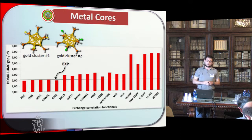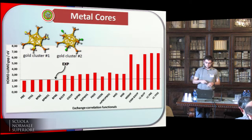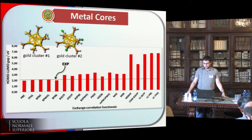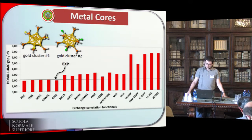For the second gold cluster, the experimental optical spectrum is available. From the optical spectrum, a HOMO-LUMO gap of slightly larger than two electron volts has been extrapolated. As you can see, the GGA functionals actually reproduce this HOMO-LUMO gap quite well, while other functionals that perform well on gold — such as M06-HF and CAM-B3LYP — yield an energy gap which exceeds the four electron volt threshold.